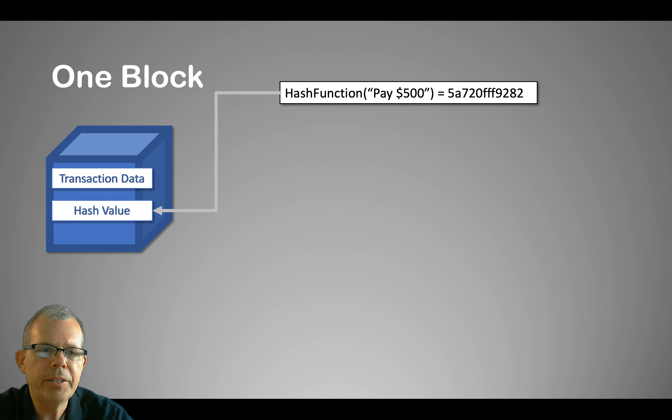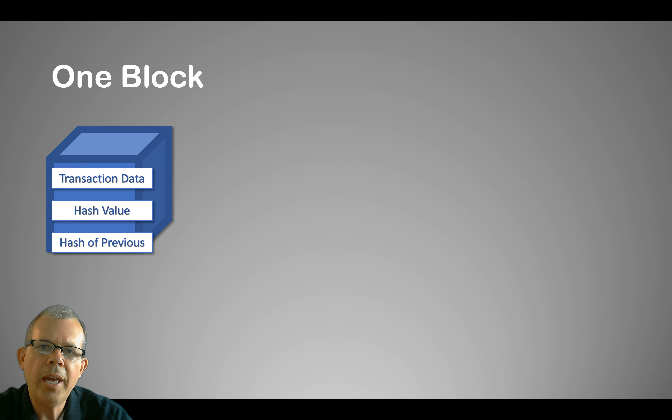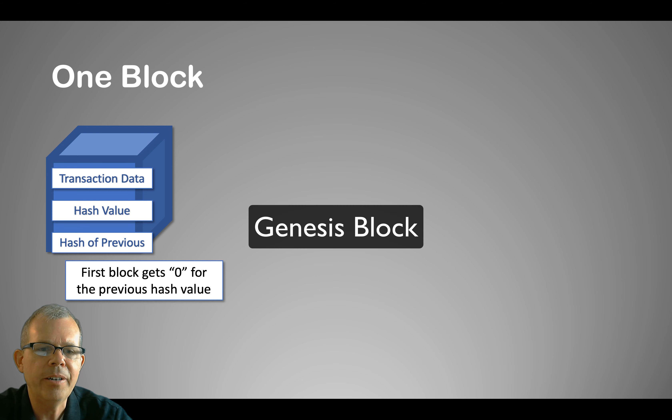So if we have this block with transaction data and then a hash value, to make it into a chain, we have another value called the hash of the previous block. Since we have the first block in our chain here, we'll call it our genesis block. We'll just give it the value of 0 because there is no previous transaction.